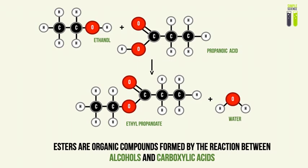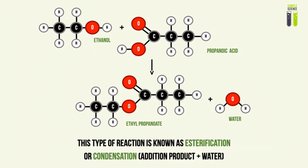So what is an ester officially defined as for you to remember for your exam? Esters are organic compounds that are formed by the reaction between alcohols and carboxylic acids. Alcohols and carboxylic acids are organic compounds we learned in the previous session, and the reaction to produce an ester is known as esterification — it simply means creating an ester — or condensation.